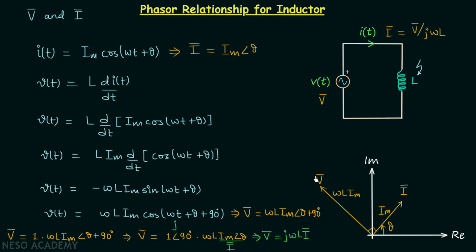When we compare V phasor and I phasor, we find that the voltage is leading the current by 90°, or equivalently, the current is lagging the voltage by 90°. So this is what happens in the case of an inductor: the voltage leads the current by 90°, or the current lags the voltage by 90°.